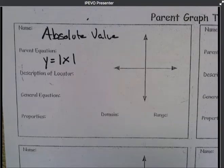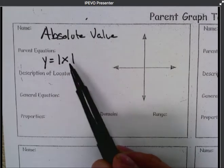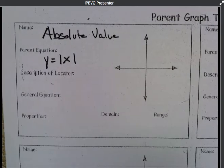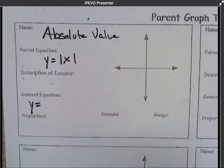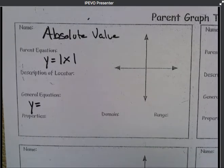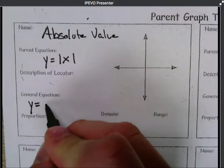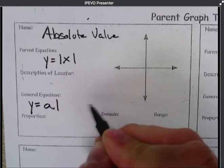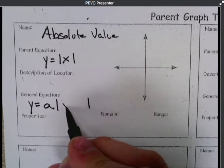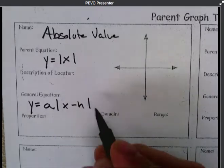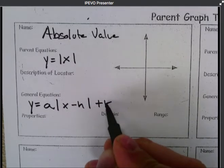So as we look at our absolute value equation, that would be y equals the absolute value of x. And the general equation is going to follow our other general equations that we have already done, and that would be that we have an a out front, and then you have your major function. Where you see the x, you're going to have an x minus h, and then outside of all that, you're going to have your plus k.